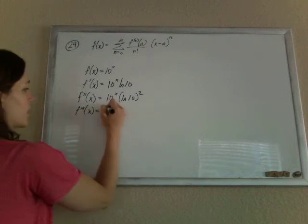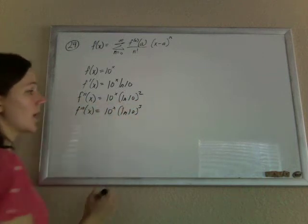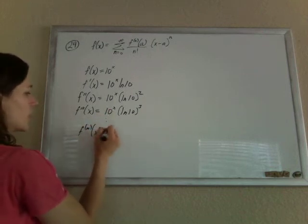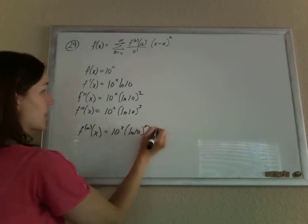Do it again. 10 to the x times another ln of 10, so ln of 10 cubed. So we see our pattern. The nth derivative is going to be 10 to the x times the ln of 10 to the nth.